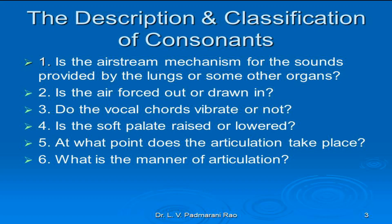Now of these six questions, the first and second questions are automatically answered. The first question asks: is the air stream mechanism for the sounds provided by the lungs or some other organs? For all English speech sounds, yes, the air stream mechanism is provided by the lungs. So it is pulmonic. We need not talk about velaric or glottalic air stream mechanism. The second question is: is the air forced out or drawn in? For the pronunciation of all English sounds, the air coming out from the lungs provides us the energy to speak. So it is not ingressive but egressive. Egressive is giving out of the air. So combinedly we can say that it is pulmonic egressive air stream mechanism that is used for the pronunciation of English speech sounds.